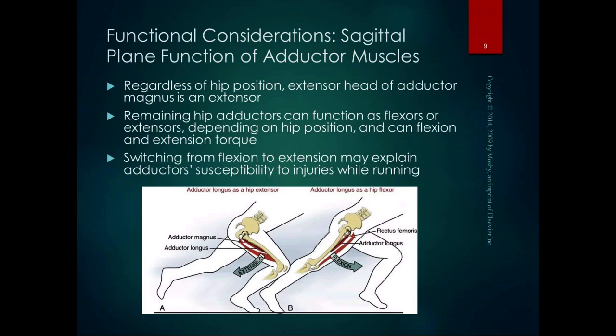The cane in the opposite hand produces force that unloads the compressive forces in the hip. We'll practice this in lab as well. Regarding the sagittal plane function of the adductor muscles: regardless of hip position, the extensor head of the adductor magnus acts as an extensor, but the rest can act as flexors or extensors depending on hip position. This switching from flexion to extension explains why groin pulls and adductor injuries are more common when running — those muscles are very susceptible to injury because of how frequently they switch function.